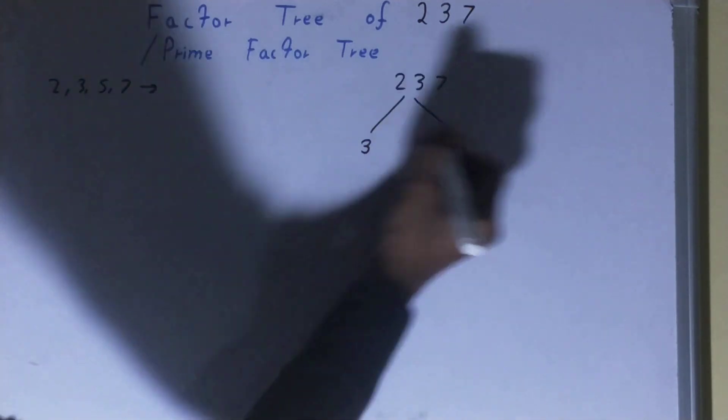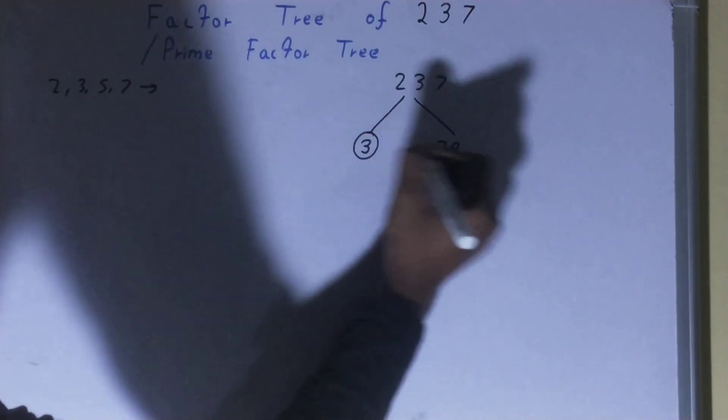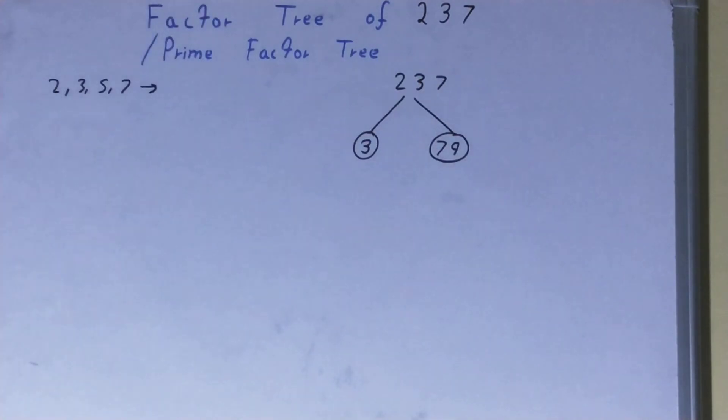Now, do we need to factorize this 79 also in the same way? The answer is no, because 79 is a prime number. So your work is done over here. The only thing you need to do is circle like this the ending nodes, and that will be our required factor tree.